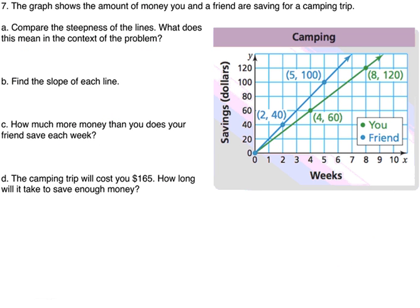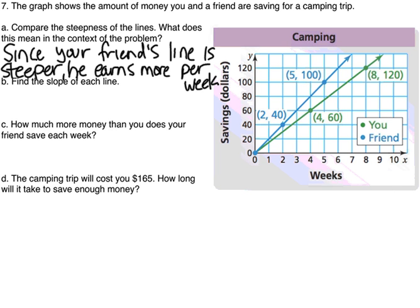Next one. The graph shows the amount of money that you're saving for a camping trip. Compare the steepness and what does that mean in the context of the problem. Since we are comparing time and money, a steeper line is going to represent more money that you're earning each week. So the friend has a steeper line, which means that they are earning more than you are each week. I said, since your friend's line is steeper, he will earn more per week, so it has a higher unit rate. Then it says find the slope of each line. We're going to need to draw in slope triangles.